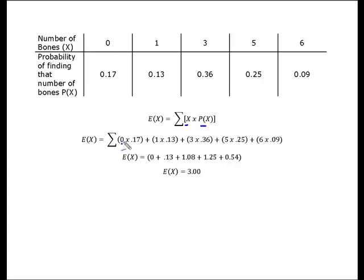So the probability that she found 0 bones was 17%. The probability that she found 1 was 13%. The probability of 3, 36%,